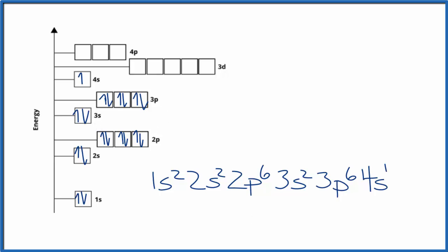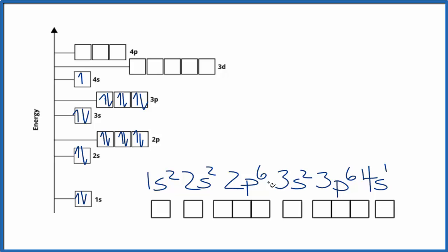Sometimes you'll see it written like this as well. And again, we just spread them out through the diagram. So that's how you write the atomic orbital diagram for potassium, K, on the periodic table.